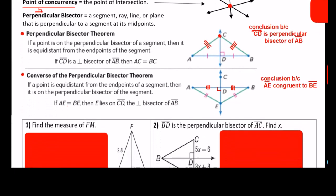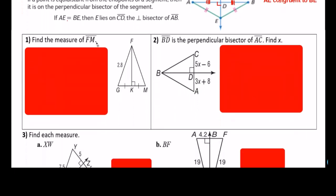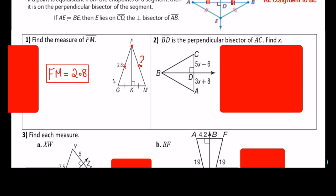Let's look at some examples. Find the measure of FM. Using my geometric eye, I see that this is a 90-degree angle and I see that this segment is cutting this right in the middle. So in other words, this is the perpendicular bisector. That means point F is equidistant to these two points, so FM equals 2.8.